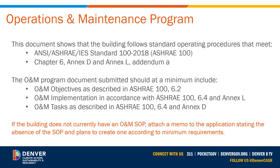When submitting your timeline adjustment application, you may need to update your operations and maintenance standard operating procedures so that they meet ASHRAE Standard 100-2018, specifically the sections listed on this slide, and include it with your submission. If your building does not currently have an O&M program, you can state that as part of your compliance plan you'll create one that meets the minimum requirements.